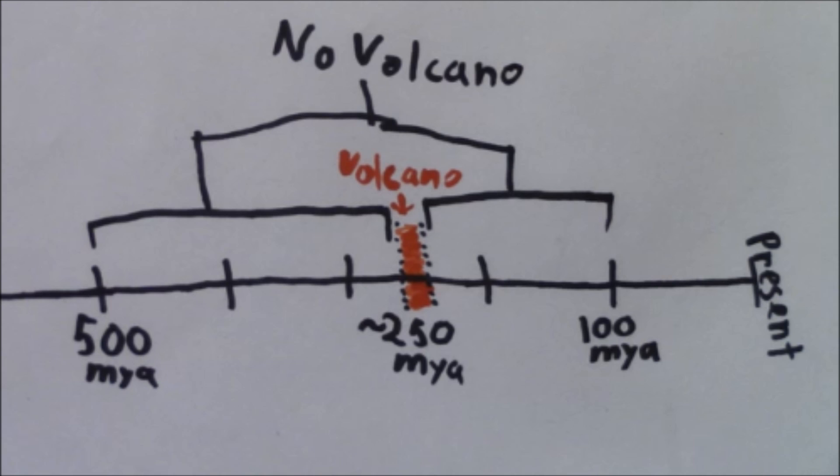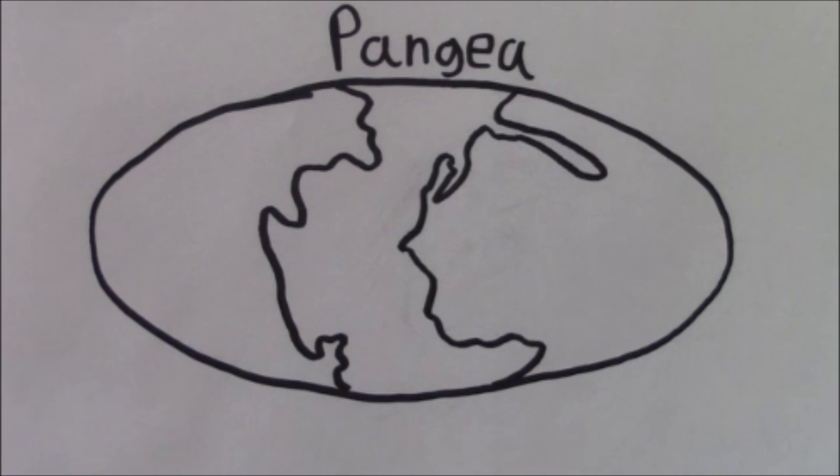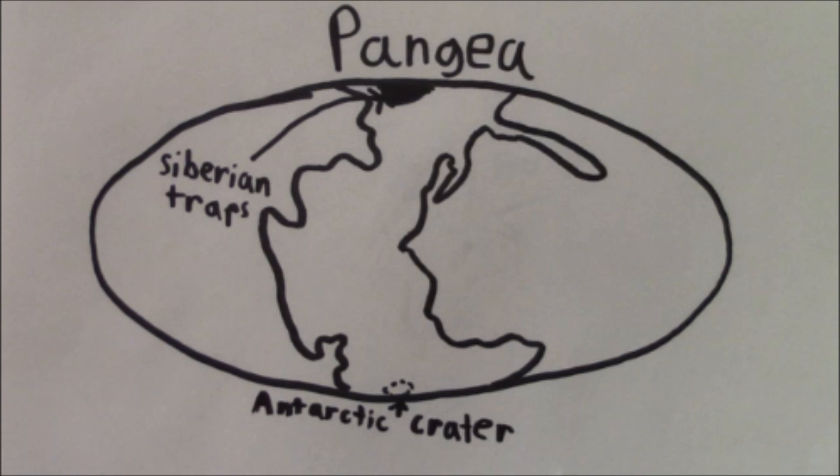250 million years ago, all the continents were lumped together in what is known as Pangaea. But more importantly, all of our current models of tectonic plate movement indicate that 250 million years ago, the area where the Siberian traps formed and the crater in Antarctica were on exact opposite sides of the planet.